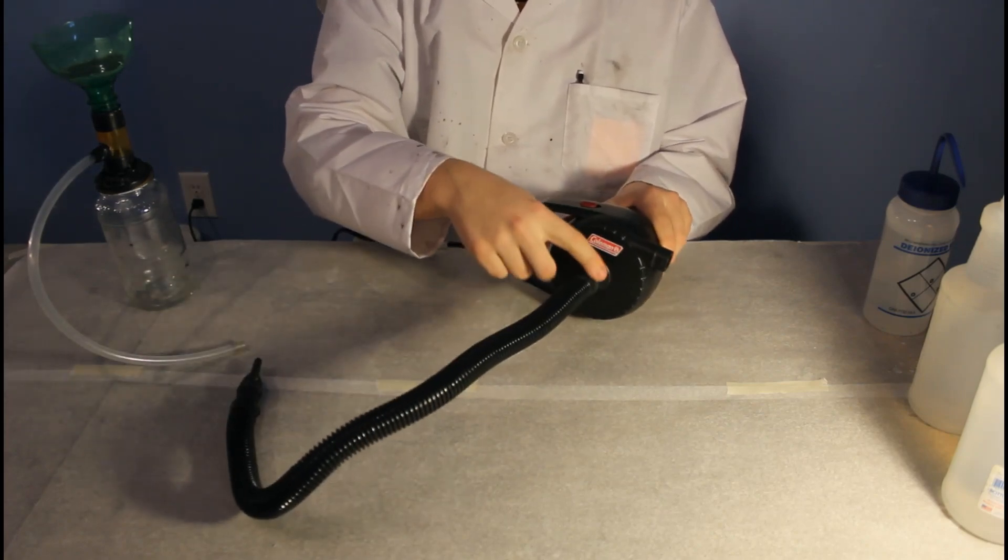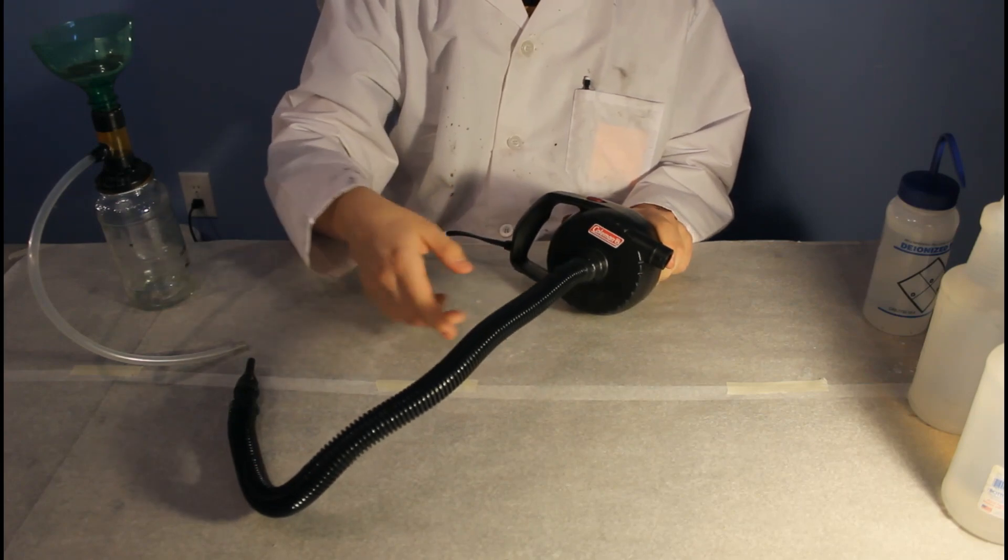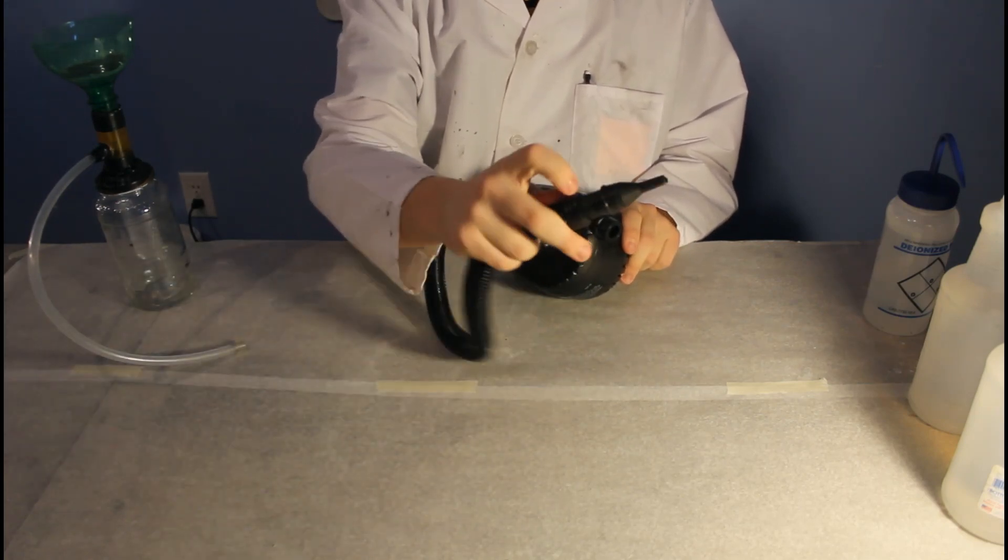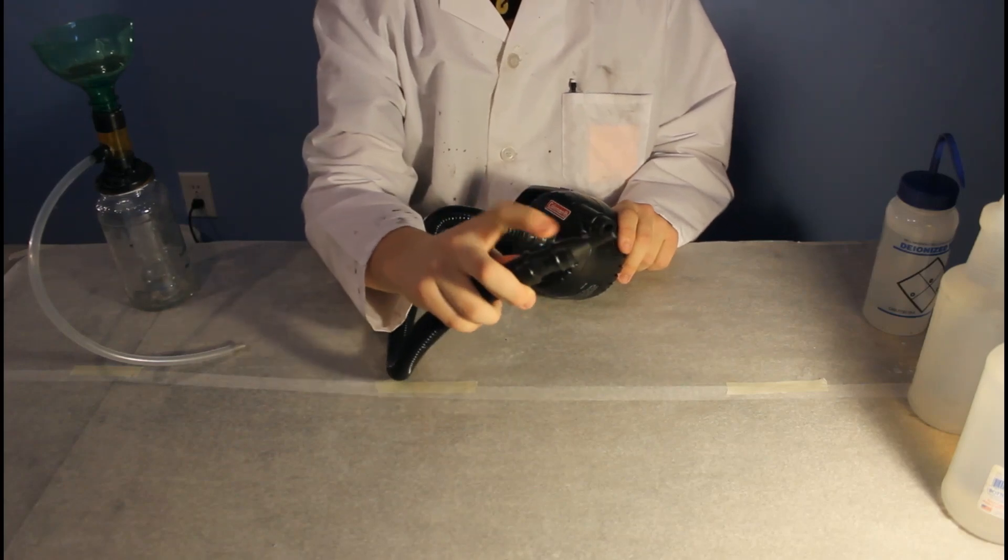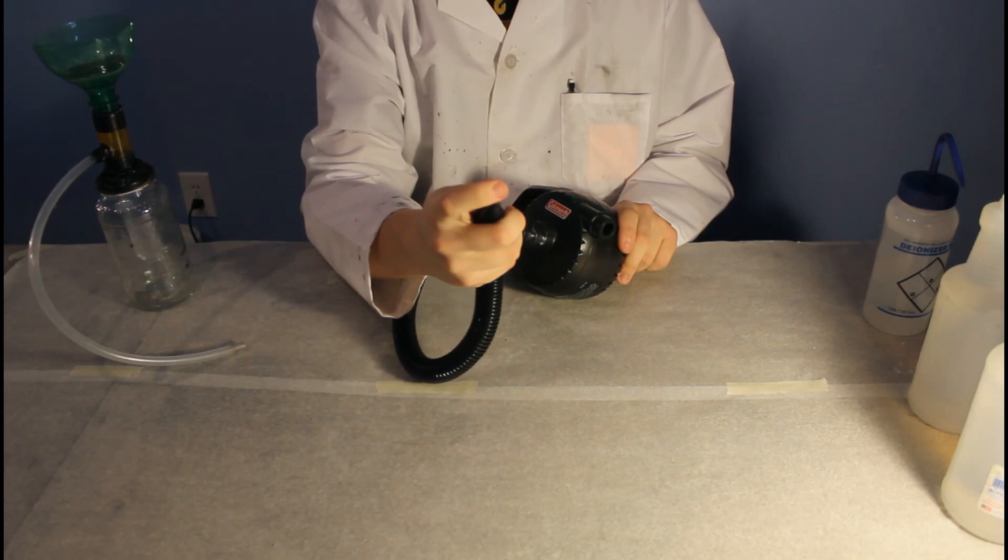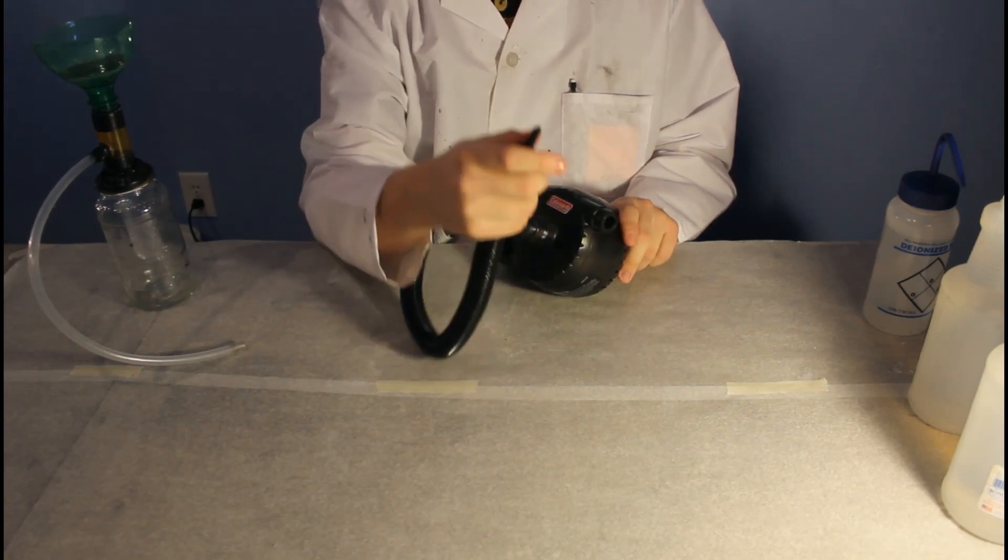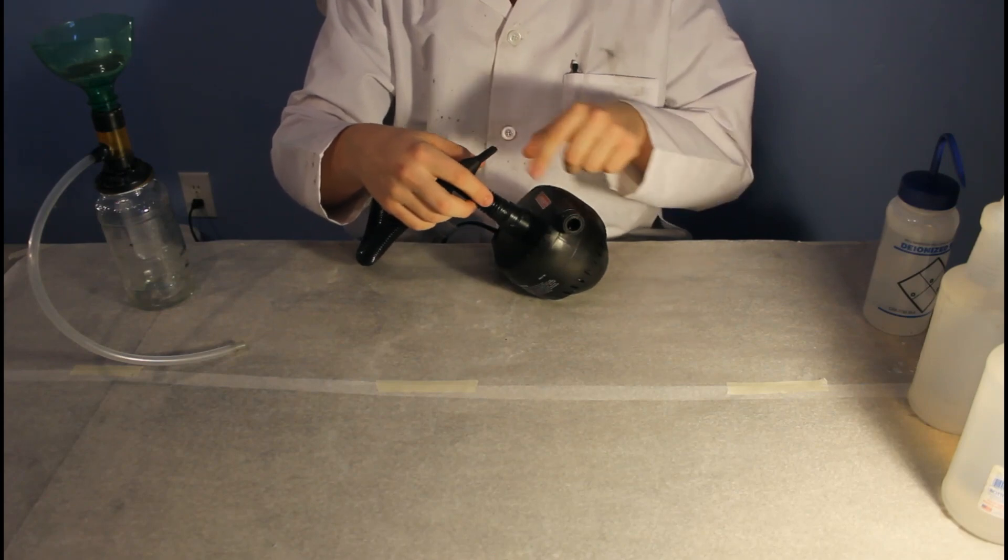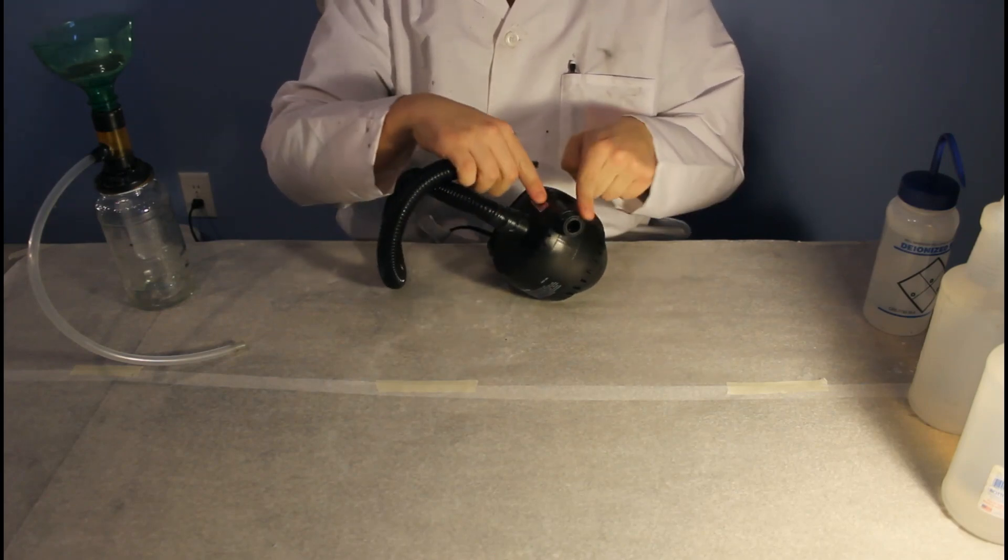And then secured it with some electrical tape to make sure that there was no leakage. And I also secured up here by the nozzle with some electrical tape just to make sure there was no leakage up there too. And I blunted the tip on here so it's easier to fit inside of this. So now, when I turn this on, it'll suck air through this nozzle and blow it out here.